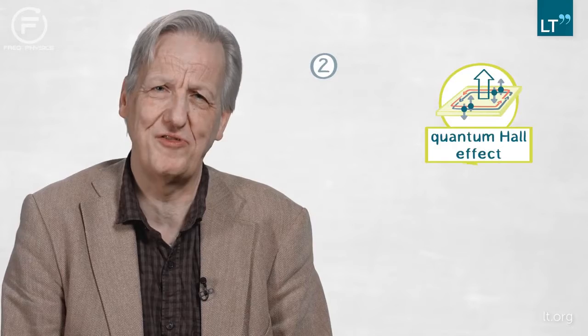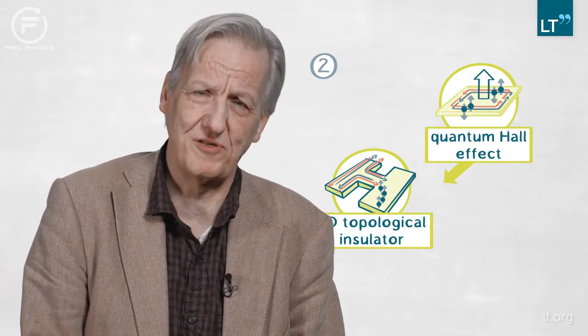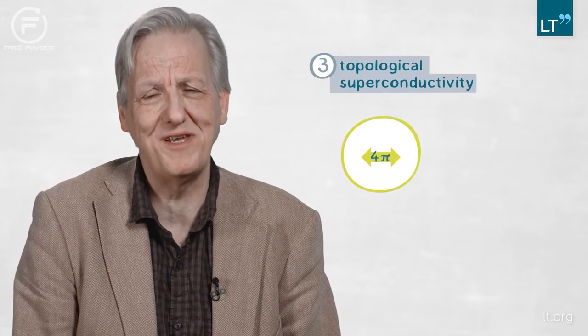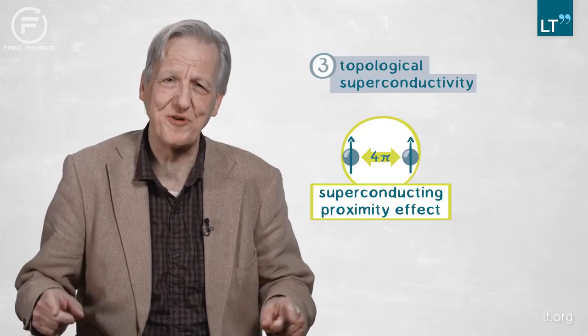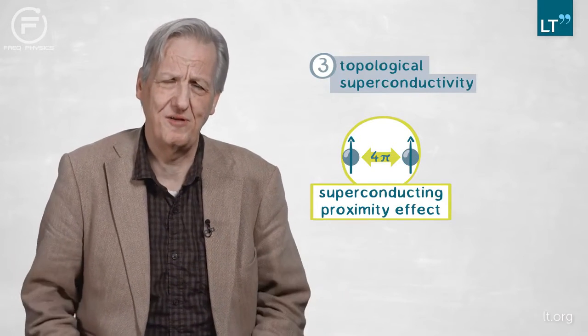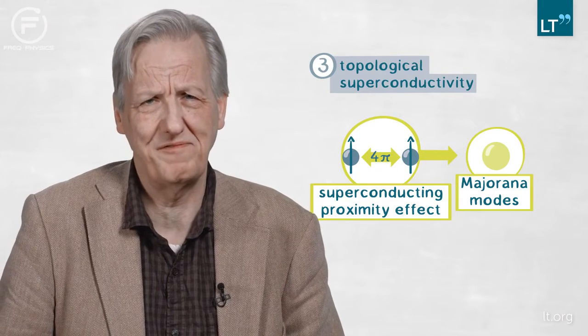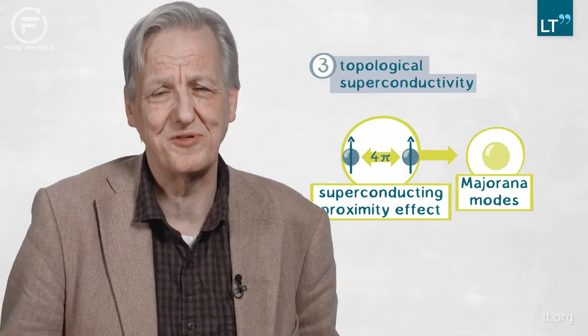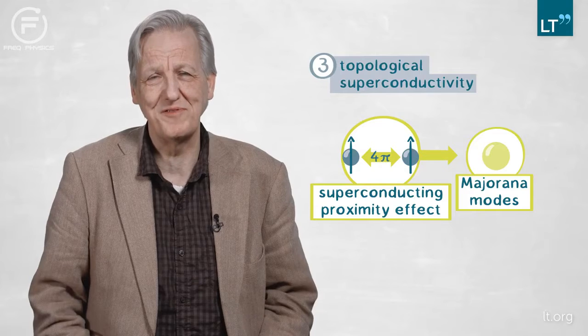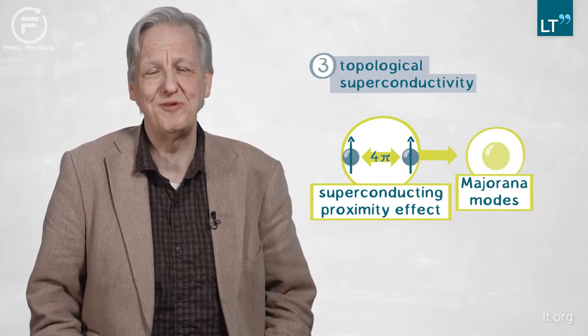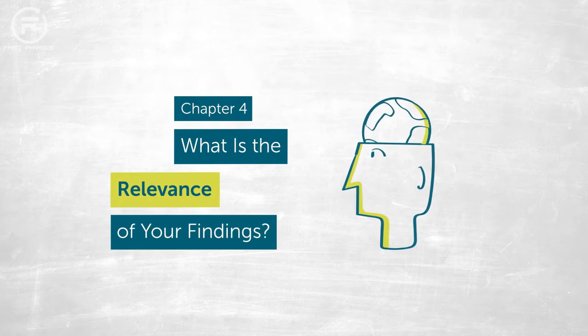Later, developing topology further in other materials, we discovered the quantum Hall effect in a three-dimensional topological insulator — again possible because of the high crystalline quality of our materials. More recently, we've been looking at topological superconductivity, where we found a so-called 4π dependence of the superconducting proximity effect. This is a strong sign that you have Majorana modes, which give rise to Majorana bound states at zero energy — a sign of topological superconductivity.